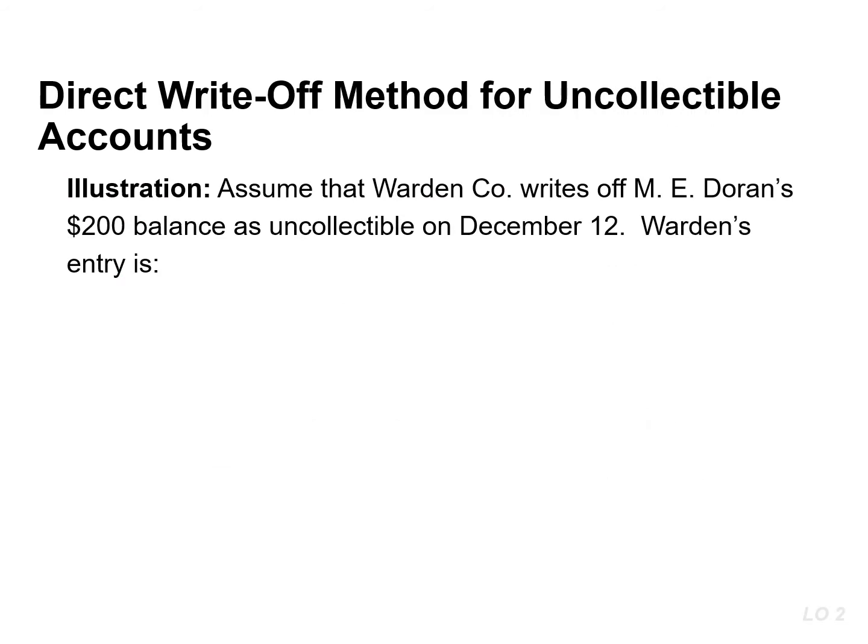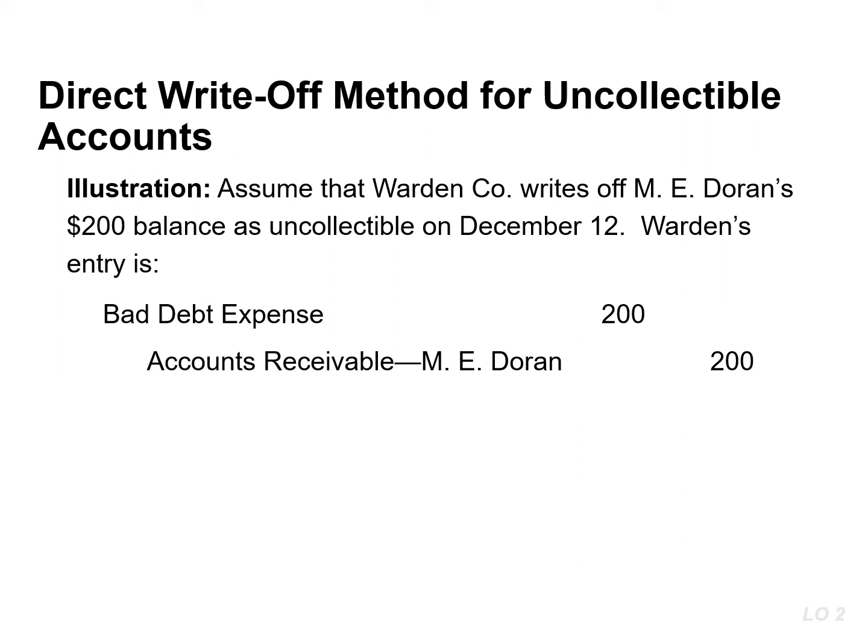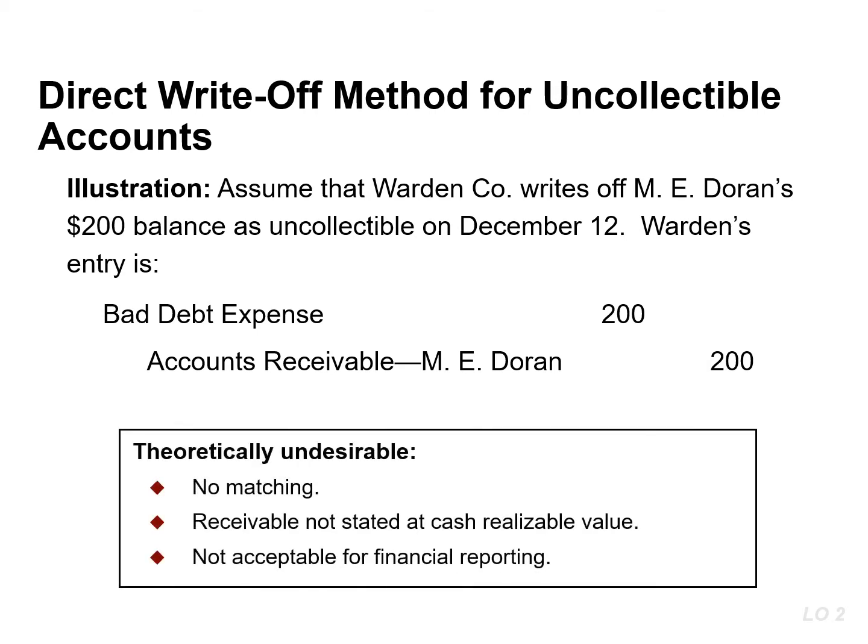Let's assume that Warden Company writes off M.E. Doran's $200 balance as uncollectible on December 12th. The journal entry would result in a debit to bad debt expense and a credit to accounts receivable — more specifically M.E. Doran — for $200. Using this method, entries to record write-offs are often made in a period following the credit sale rather than in the period in which the sales were made. This credit sale most likely occurred several months ago; as a result, this method does not follow the matching principle.